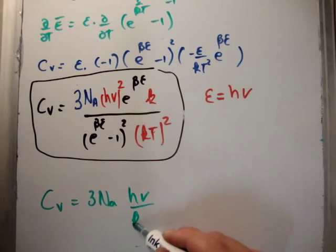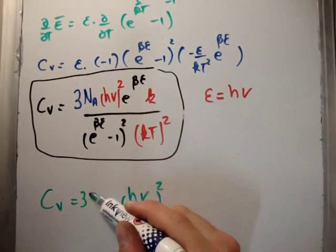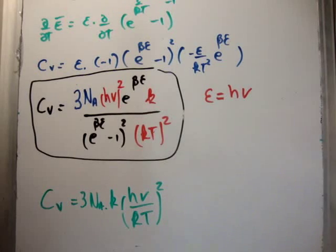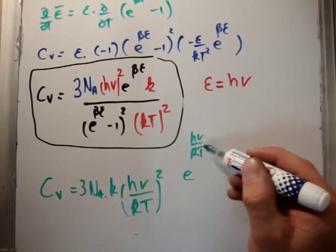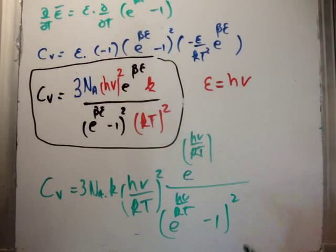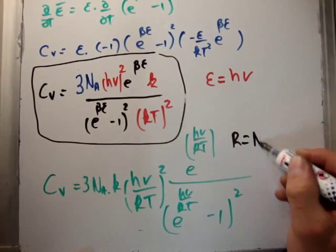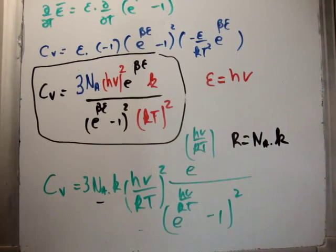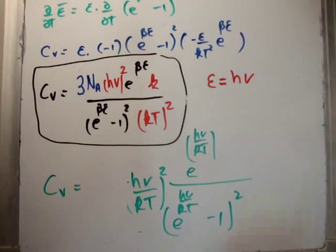We have h nu over kT all to be squared. Three N sub A times k. Then we have e to the h nu over kT. And we have e to the h nu over kT minus one to be squared. And the last thing is, we know that the molar gas constant is equal to the molecular gas constant multiplied by Avogadro's number. So R is equal to N sub A times k, which is exactly what we have down here. So what we actually have is 3R. So plug that in down here. We have 3R.